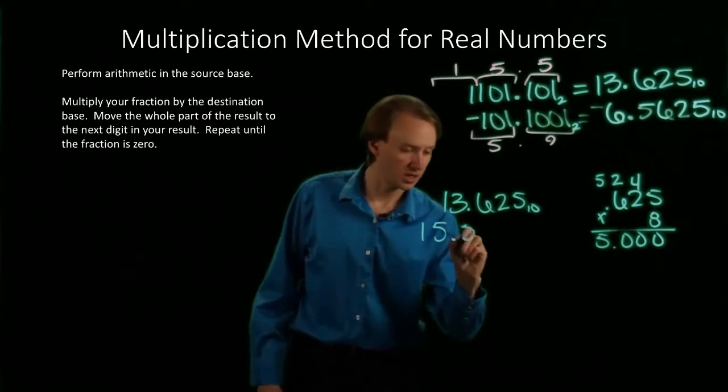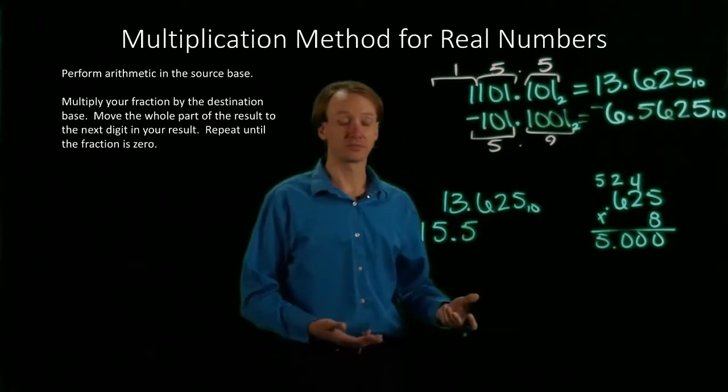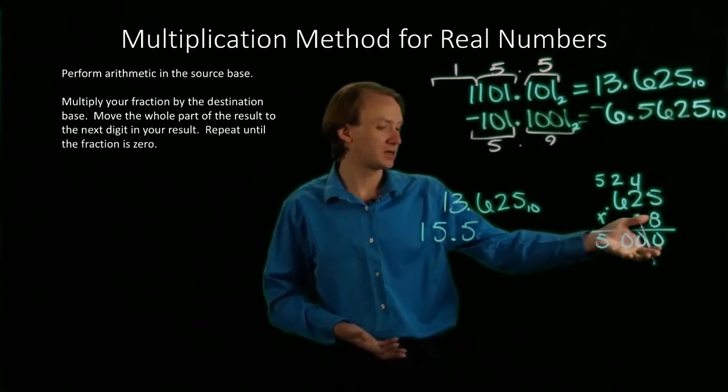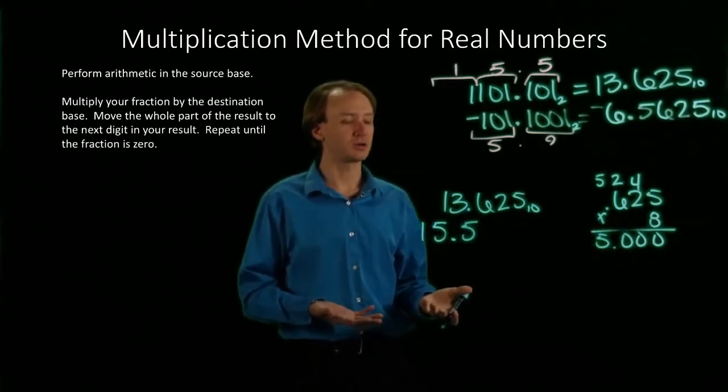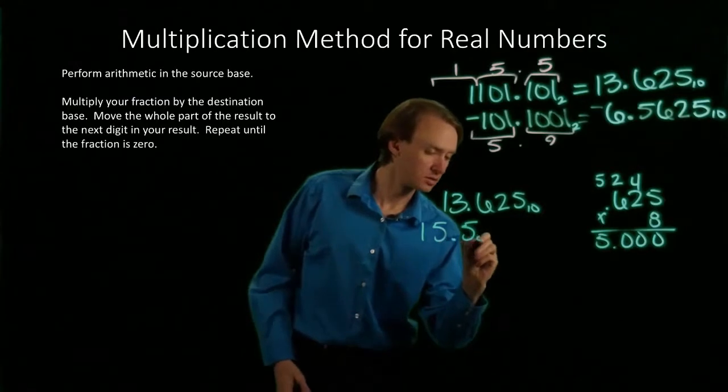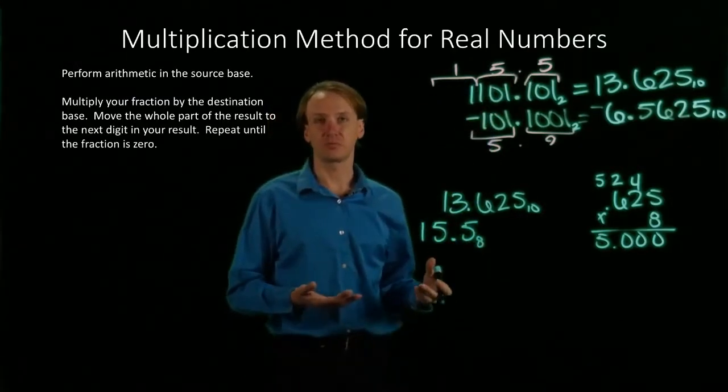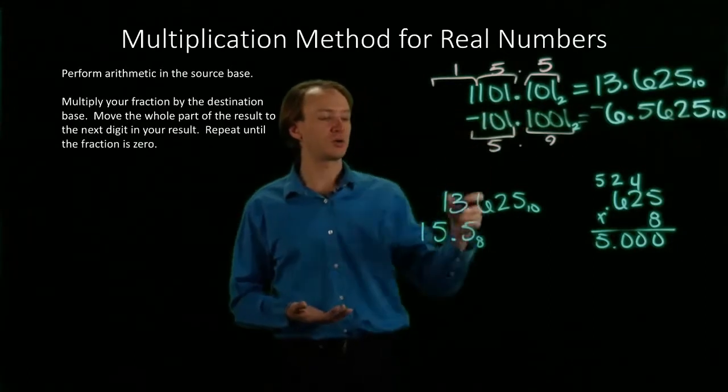So I would write down the 5 here. And since I have nothing else here to multiply by 8, I'm done. I can stop here. And if I look, that's exactly what we expected from just converting the binary number directly.